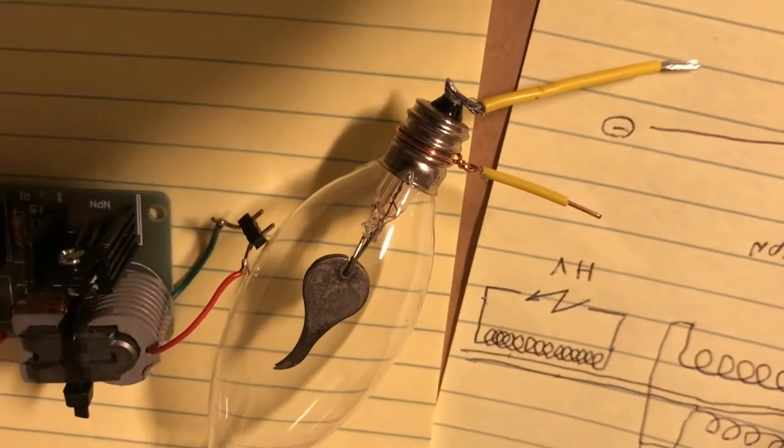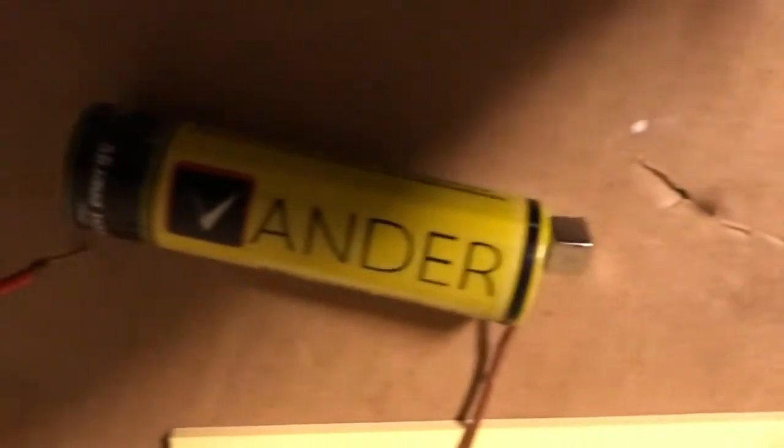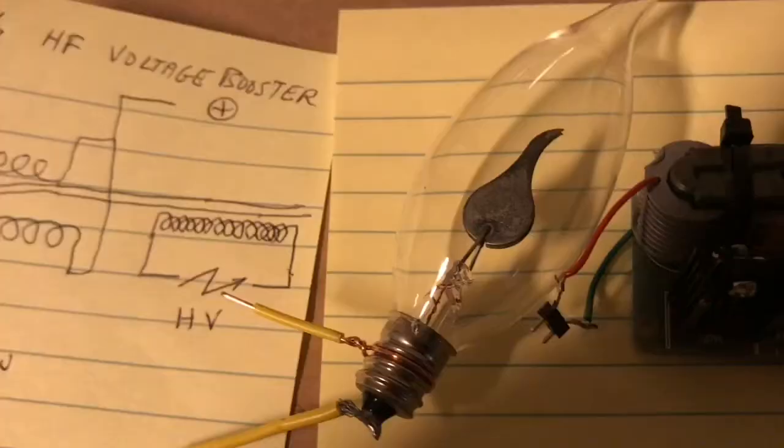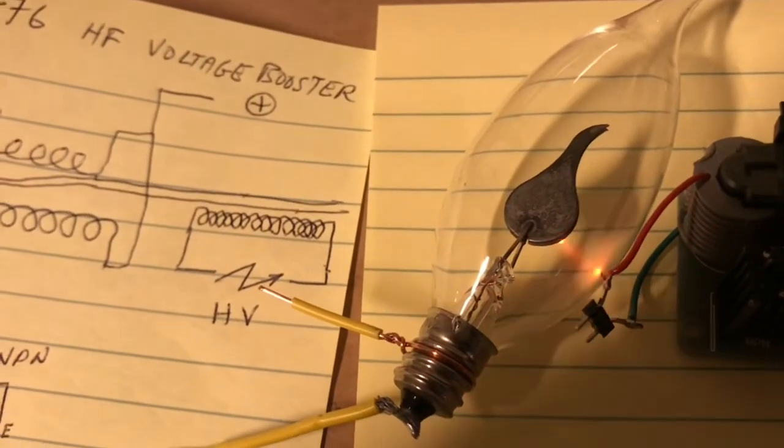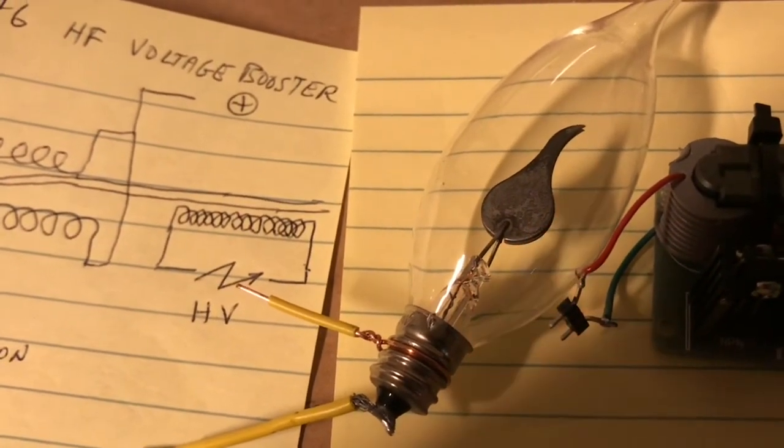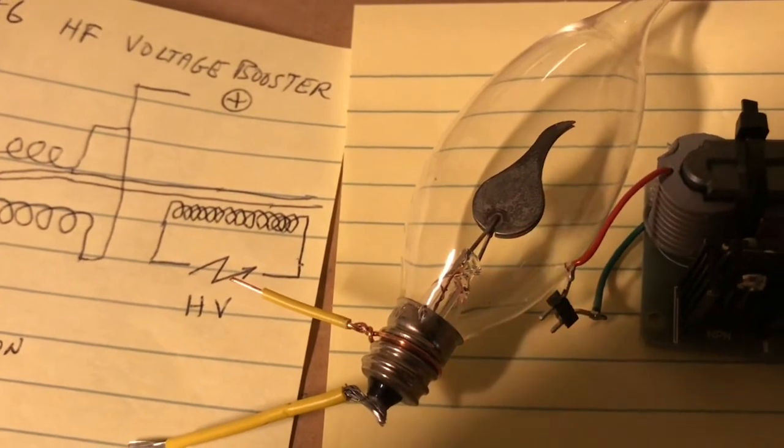Let's see if it'll work with a 1.5 volt battery instead of this 3.7 volt battery. It still generates high voltage but not enough to form an arc. It certainly lights up the neon bulb.